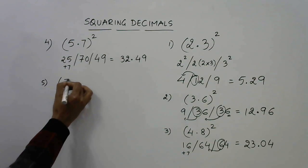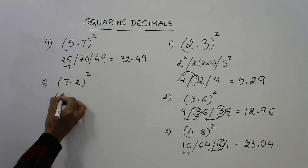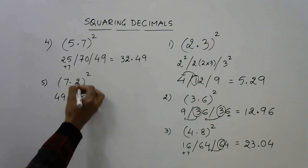Now I will explain less. Let's have (7.2)². 7² is 49, 7 times 2 is 14, double is 28, and 2² is 4. So 4 retained, 8 retained, 2 carried forward, so 51. So 51.84.